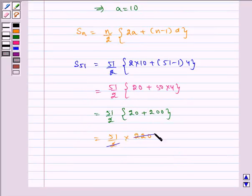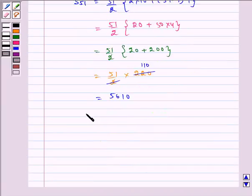Which is equal to 51 by 2 multiplied by 220. Now, this gets cancelled by 110. So, it is equal to 5610. Therefore, S51 is equal to 5610.